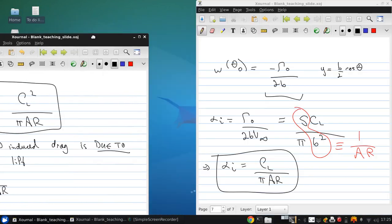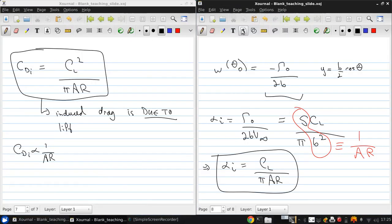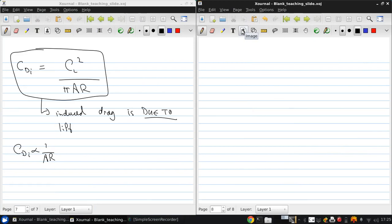So now the next natural question that arises is how do we achieve that elliptical lift distribution? So if we consider a wing with no twist, which means alpha and alpha at zero lift are constant across the span, that means that the effective angle of attack, which is alpha minus alpha i, is also constant.